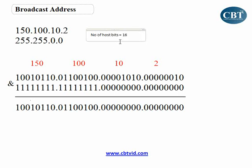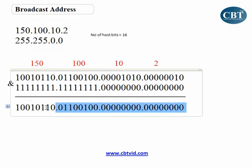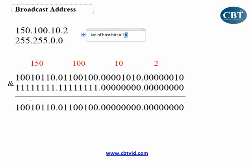First, we find the number of host bits. Then, after that, we look at the network address that we have. Here is my network address — I just calculated it by ANDing an IP address and subnet mask. You look at your network address, then count this many zeros — meaning according to the number of host bits — from the right side. Count this many zeros and then convert them to ones. Here we count 16 zeros: here are 8 and here are 8, up to this part. I have to convert these numbers to ones.